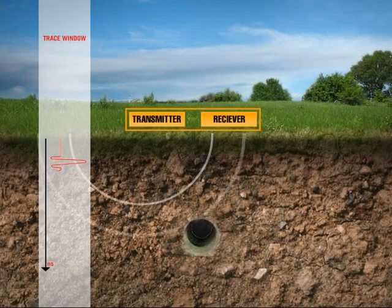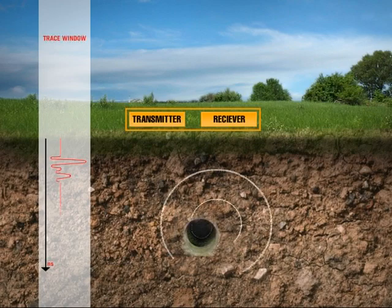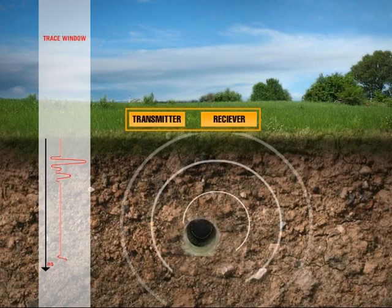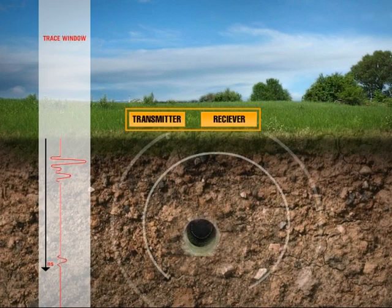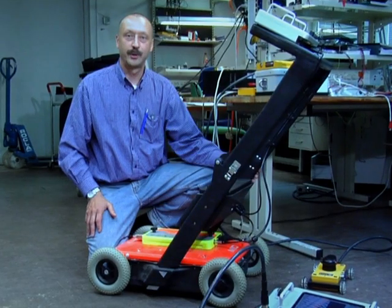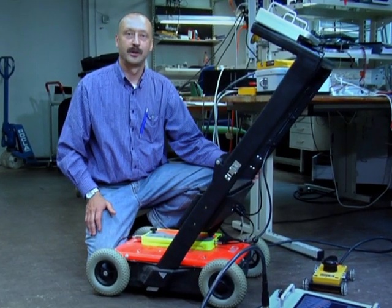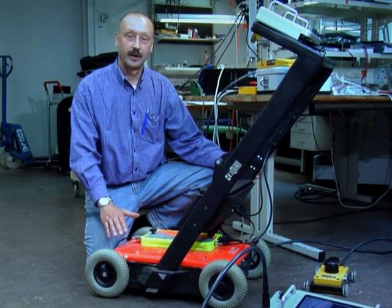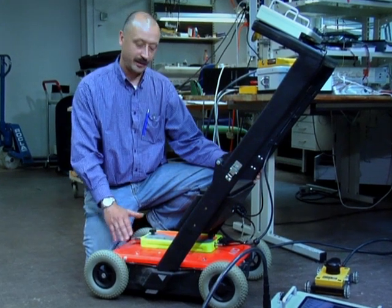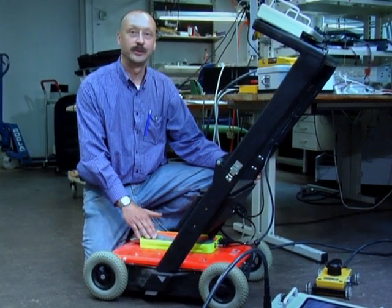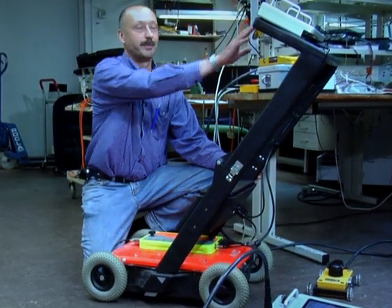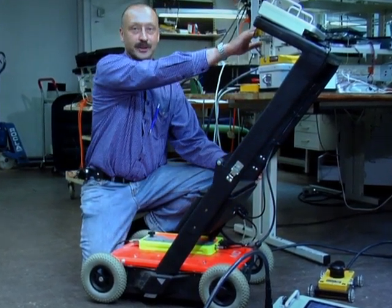By using this technique we are able to find hidden metallic and non-metallic structures. A GPR system consists of an antenna, a control unit and a display storage device.